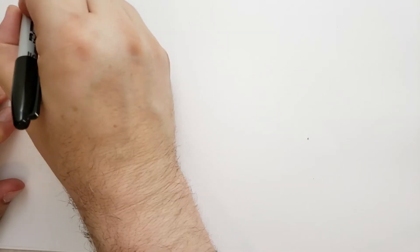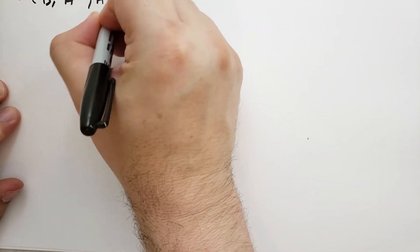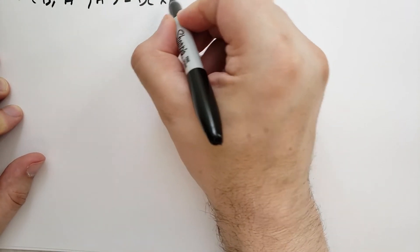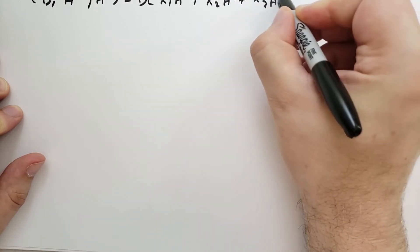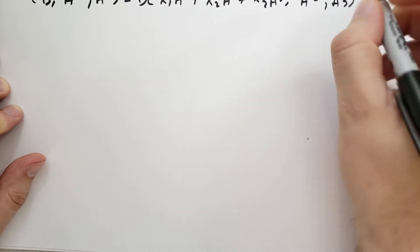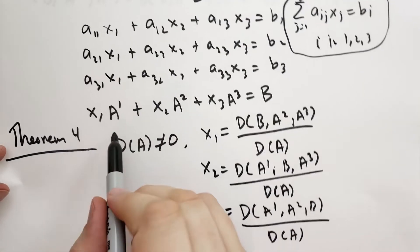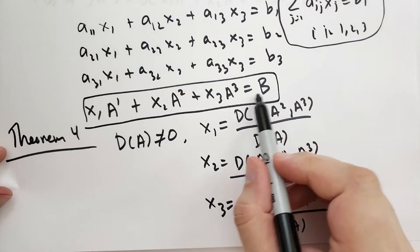Proof. We use the same technique for the proof as we did in the 2x2 case. We note that the determinant of (B, A2, A3) is the same as the determinant of (X1*A1 plus X2*A2 plus X3*A3, A2, A3). Where did we get that from? We got that from the original equation. B is equal to that.